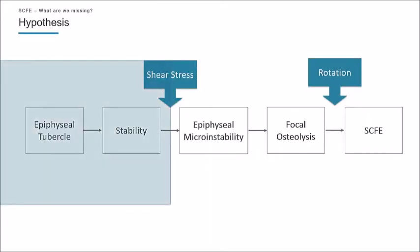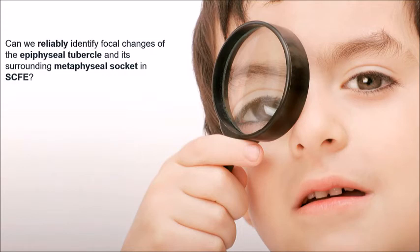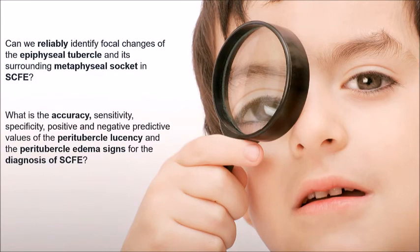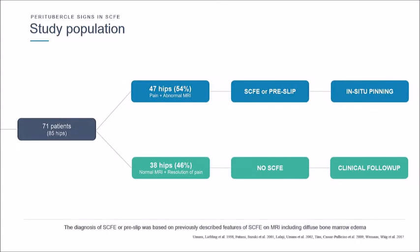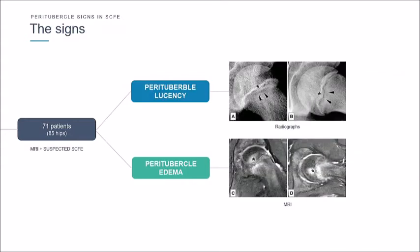We wanted to understand whether this hypothesis is useful clinically — specifically, can we use what's happening around the tubercle to detect early slip occurrence? We have a cohort of patients that had an MRI to look for a pre-slip, who were also followed over time to see if they truly had a slip or not. Patients that had a slip underwent in-situ pinning, and patients that were observed, where there was no MR evidence of a slip, eventually had their symptoms resolved. We used this cohort to look at the diagnostic accuracy of tubercle osteolysis seen on X-ray compared to the gold standard seen on MR.